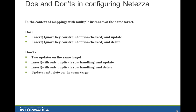For configuring data in 9.x onwards, here are the do's and don'ts. You can insert with the 'ignore key constraint' property checked and then update, or insert with ignore key constraint checked and delete. But if you have insert and update without ignore key constraint, your session will fail. Similarly, insert and delete without ignore key constraint will fail. If you have the duplicate row handling property set but did not check 'ignore key constraint,' you may encounter issues. For the don'ts: you cannot have two updates on the same target, cannot insert with only duplicate row handling and no ignore key constraint followed by update or delete, and cannot have both update and delete on the same target.